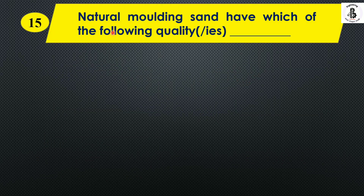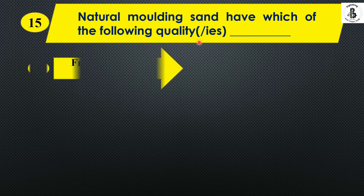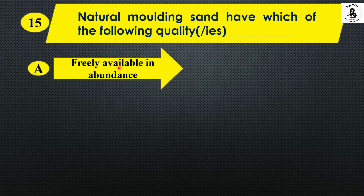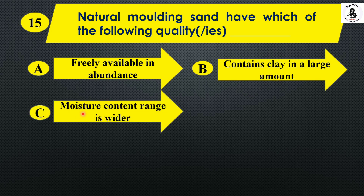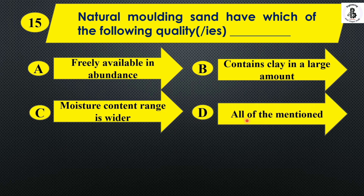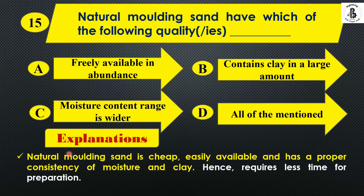Question 13: Natural molding sand has which of the following qualities? Option A: freely available. Option B: contains clay in a large amount. Option C: moisture content range is wider. Option D: all of the above. Natural molding sand is cheap, easily available, and has proper consistency of moisture and clay, hence requires less time for preparation. So the right answer is Option D, all of the above.